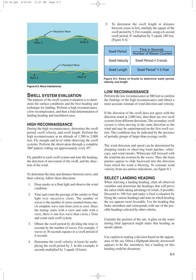During the high reconnaissance, determine the swell period, swell velocity, and swell length. Perform the high reconnaissance at an altitude of 1,500 to 2,000 feet. Fly straight and level while observing the swell systems, performing the observation through a complete 360-degree pattern, rolling out approximately every 45 degrees. Fly parallel to each swell system and note the heading, direction of movement of the swell, and direction of the wind. To determine the time and distance between crests and their velocity: drop smoke or a float light and observe the wind condition, then time and count the passage of the smoke or float light over successive crests. The number of waves is the number of crests counted minus one, since a complete wave runs from crest to crest.